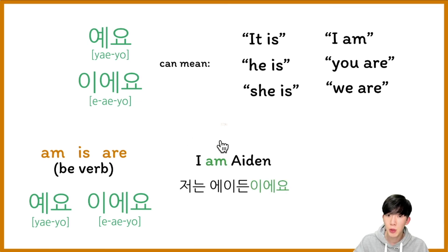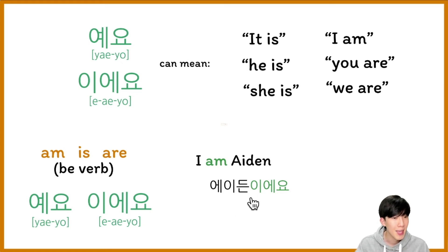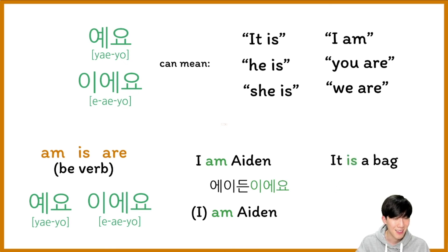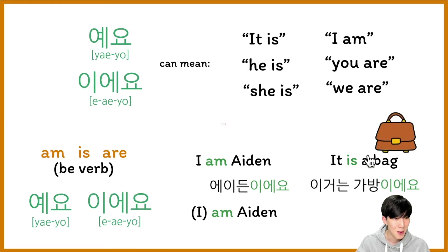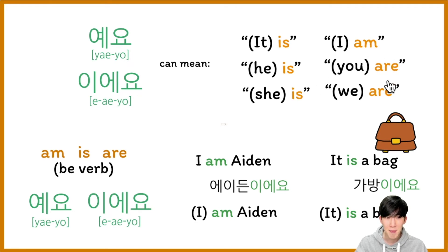I am Aiden — so there is 'is', right? So I'm going to say 저는 에이든이예요. 저는 에이든이예요. But in Korean, if it's obvious, we don't need to put the subject. So 에이든이예요. One more: it is a bag — 가방, right? So 이거는 가방이에요. 이거는 가방이에요. There is 'is', so I put 이예요 at the end of the sentence. And also I can drop 이거는. So it becomes 가방이에요. 괜찮아요? So everything — M is A — we can drop the subject. That's why everything can be 이예요. And 예요.